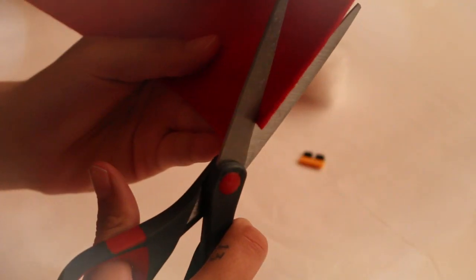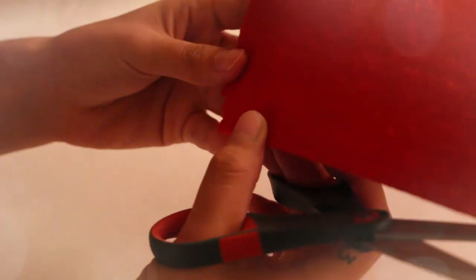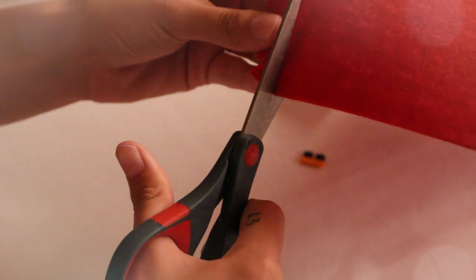For the chicken's wattle, cut out a small red felt rectangle. And for the legs, cut out two pieces of pipe cleaner around 2-3cm long.